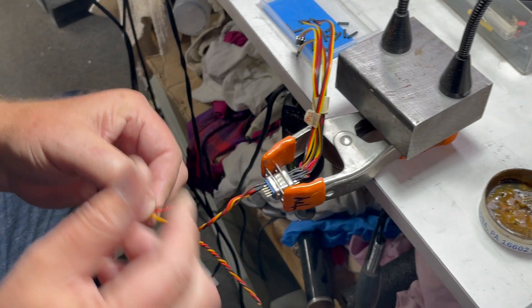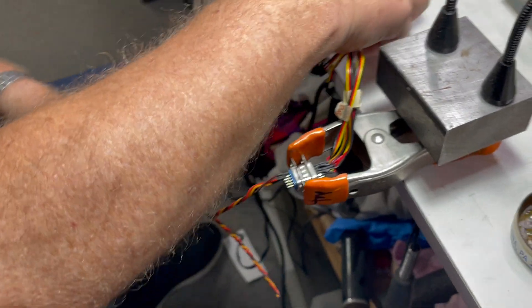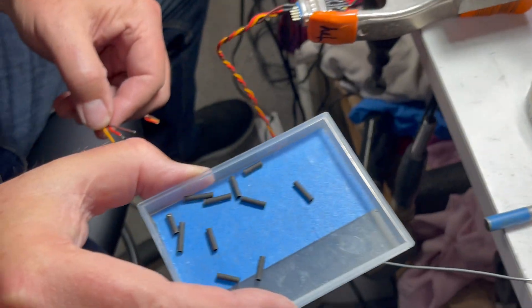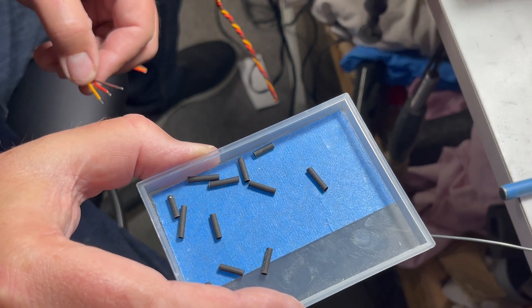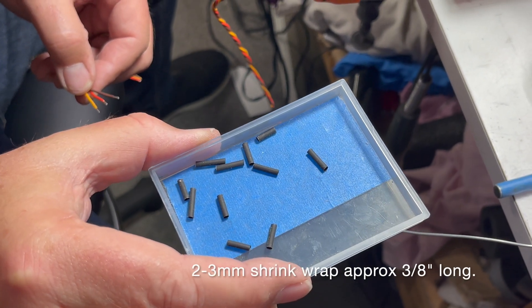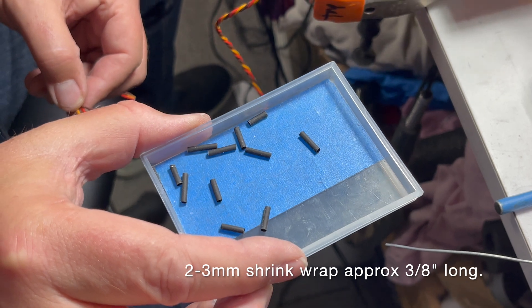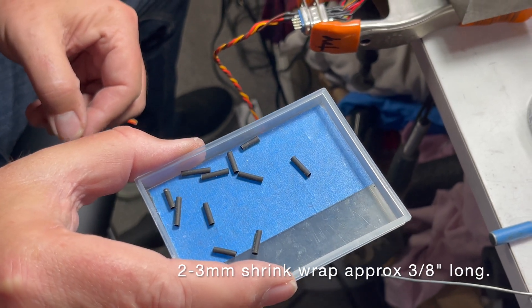So these are pretty much pre-soldered and what I have is I've pre-cut a whole bunch of them. I think these are two millimeter shrink wrap and I cut them about a quarter to three eighths of an inch long which is about six to nine millimeters.